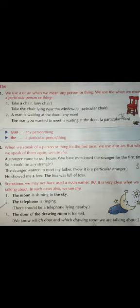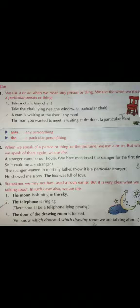When we speak of a person or a thing for the first time, we use A or AN. But when we speak of them the second time, we use THE. For example: 'A stranger came to our house' — the stranger is mentioned for the first time. Then: 'The stranger wanted to meet my father' — now targeting that particular stranger. Another example: 'He showed me a box. The box was full of toys.' So A box becomes THE box when repeated. Whenever you mention anything for the first time, use A or AN; when mentioning the same thing a second time, use THE.